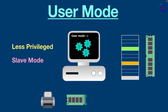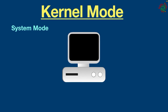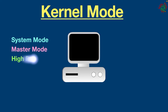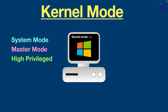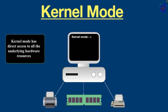Applications running in user mode cannot access hardware resources directly. To access the resources, they must go through kernel mode. Kernel mode is also known as system mode, master mode, or high privileged mode. The system always starts in kernel mode when it boots up. Kernel mode has direct access to all the underlying hardware resources, and it allows applications to have full and unrestricted access to the system and its resources.